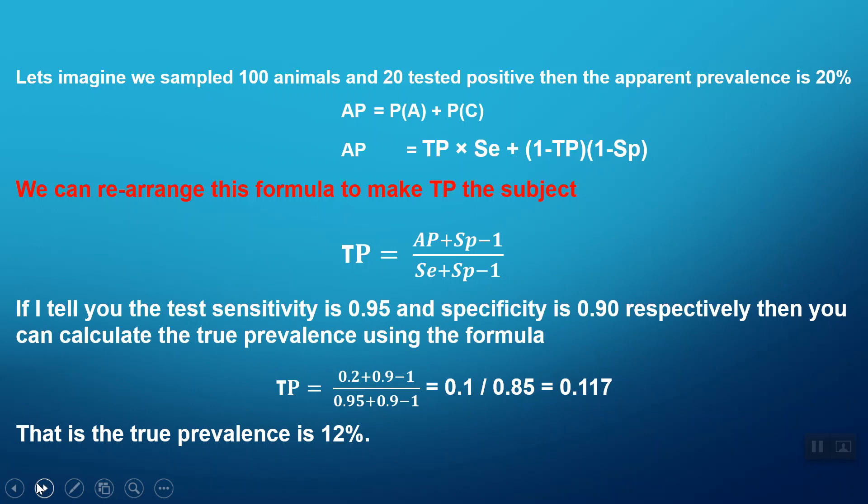Now I'm going to let you in on a little secret: rearranging the formula to move it from the subject being apparent prevalence to it being true prevalence is actually something I struggle with nowadays. So I either do use the formula, or I actually put the numbers in here so that I'm no longer dealing with algebra of Se and Sp and so on.